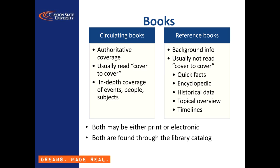The first type of source I want to talk about is books. For remote research you may think books are less usable since we're not actually in the library, but as a matter of fact the Clayton State Library has developed a pretty extensive collection of electronic books, which are accessible from anywhere if you use your SWAN credentials to authenticate. So you still actually have access to a large part of our book collections.